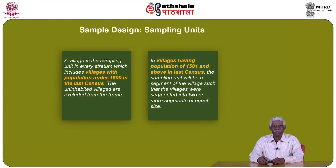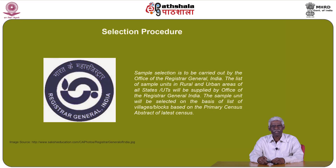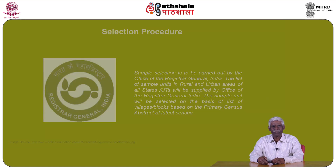Let us focus on sample design. A village is the sampling unit in every stratum which includes villages with population under 1500 in the last census. Uninhabited villages are excluded from the frame. In villages having population of 1501 and above in the last census, the sampling unit will be a segment of the village, such that the villages were segmented into two or more segments of equal size. Sample selection is carried out by the office of the Registrar General of India, which supplies the list of sample units in rural and urban areas of all states and union territories, based on the primary census abstract of the latest census.